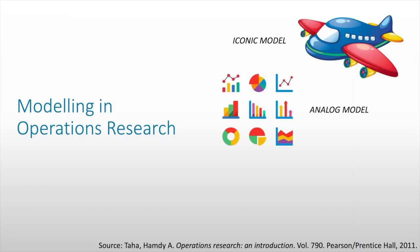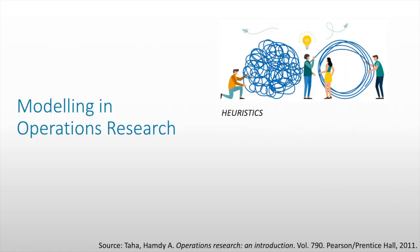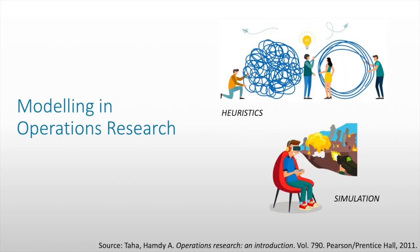Another model is the analog model. Analog models are a kind of abstract representation of a real system — for example, graphs. Then we have symbolic or mathematical models. A linear program, or LP, is an example of a mathematical model. It basically models the real system through mathematical equations and mathematical functions. With the advancement of technology, two other models have been created: heuristics and simulation. Heuristics is basically rule of thumb, or other techniques which may be useful in solving problems.